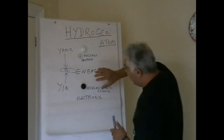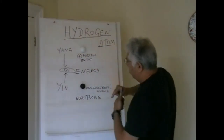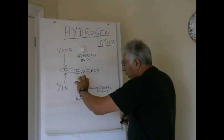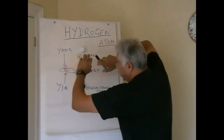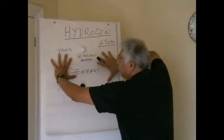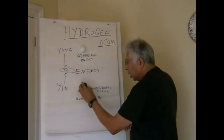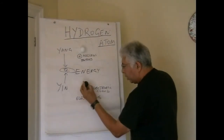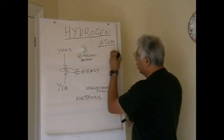Between the nucleus of the atom and the electron there is a gap — an empty space, a void. The electrons not only rotate on themselves, they also go around in this electronic cloud.